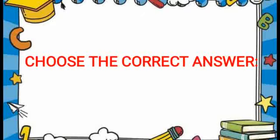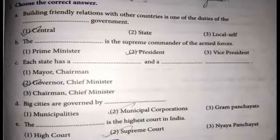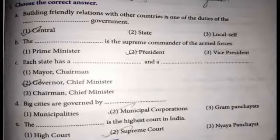Let me repeat once again. Building friendly relations with other countries is one of the duties of the central government. The president is the supreme commander of the armed forces. Each state has a governor and a chief minister. Big cities are governed by municipal corporations. The supreme court is the highest court in India.